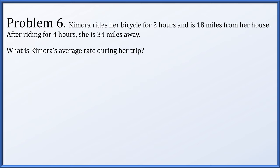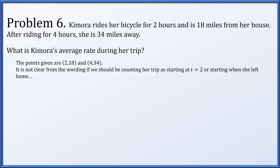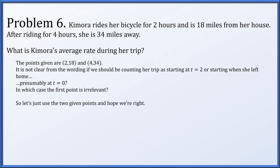In problem six, Kimora rides her bicycle for two hours and is 18 miles from her house, then riding for four hours she is 34 miles away. What's the average rate during her trip? The two points given are (2 hours, 18 miles) and (4 hours, 34 miles). Computing delta y over delta x gives 8 miles per hour. This was verified as correct by the homework portal, though the wording of the problem is not especially clear.